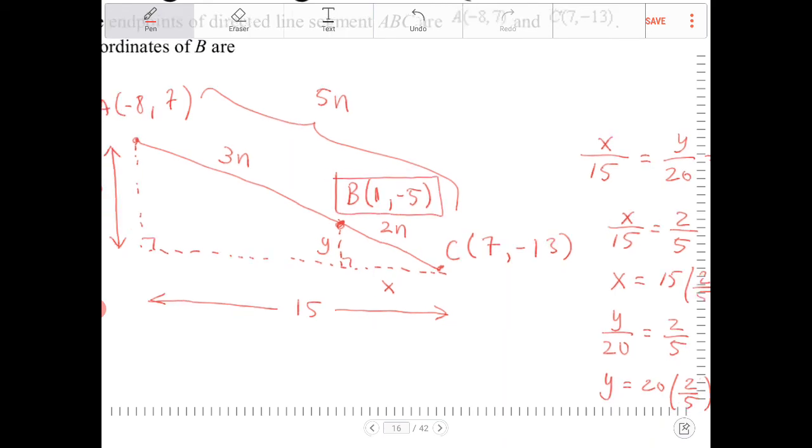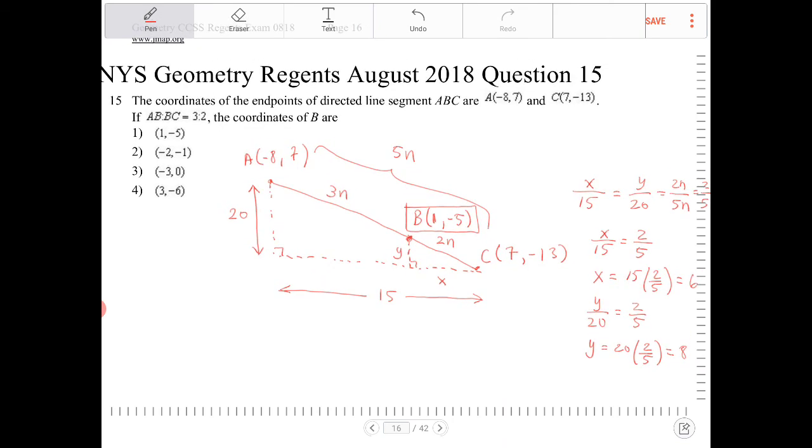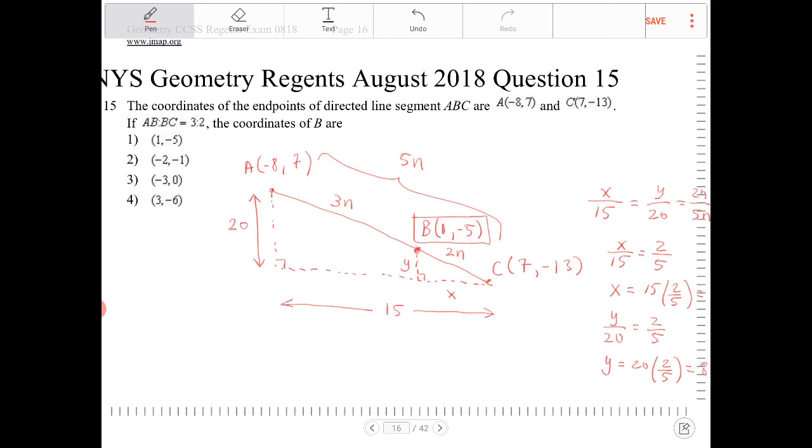So the coordinate for B that will generate AC being partitioned into ratios of 3 to 2 will be 1 comma negative 5. And that would be option 1.